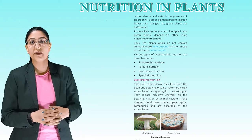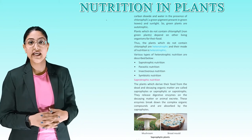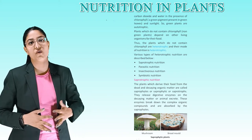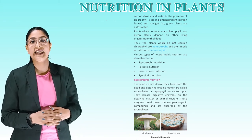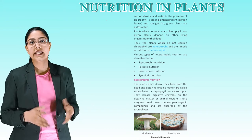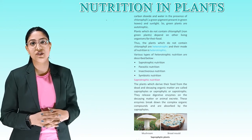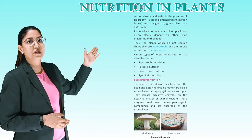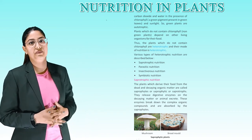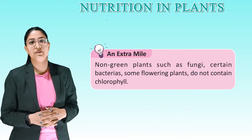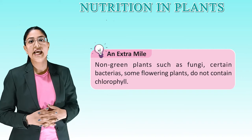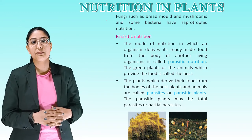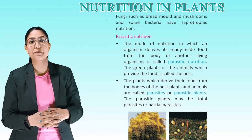Saprophytic nutrition. Plants which derive their food from dead and decaying organic matter are called saprophytes or saprotrophs. They release digestive enzymes on the decaying matter or animal excreta. These enzymes break down complex organic compounds, which are then absorbed by the saprophytes. Non-green plants such as fungi, certain bacteria, and some flowering plants do not contain chlorophyll. Fungi such as bread mold and mushrooms, and some bacteria, have saprophytic nutrition.